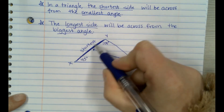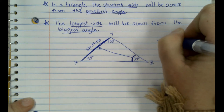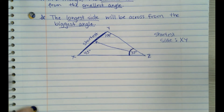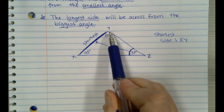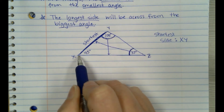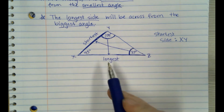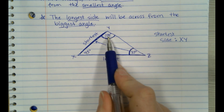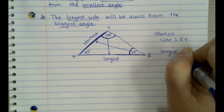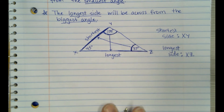We would say this is side XY. So my shortest side is XY. Now, my biggest angle — obviously 100 is my biggest angle. If this is my biggest angle, across from it will be my longest side. So this is my longest side. You could tell that one based on looks, but based on the angles, 100 degrees is biggest. So across from it, this is my longest side. We would say XZ, or ZX.